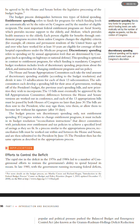Discretionary spending refers to spending set by annual appropriation levels that are determined by Congress, such as spending on highways or national defense. This spending is optional, in contrast to entitlement programs for which funding is mandatory. Congress's budget resolution includes levels of discretionary spending, projections about the deficit, and instructions for changing entitlement programs and tax policy. The House and Senate appropriations committees each take the total amount of discretionary spending available, according to the budget resolution, and divide it into 13 sub-allocations for each of their 13 sub-committees.